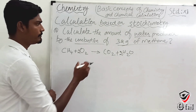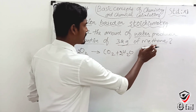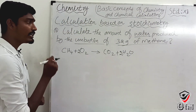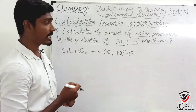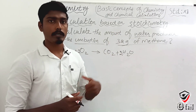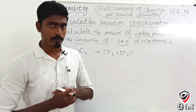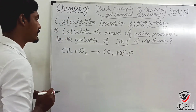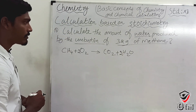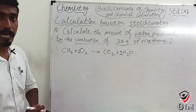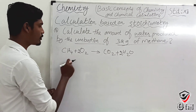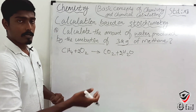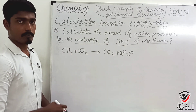Now, the question asks: when 32 grams of methane undergoes combustion, how much water is produced? First, let's find how much water comes from 1 mole of methane. We use the grams of methane — that is, the molar mass. The ratio from the equation is 1 mole CH₄ to 2 moles H₂O.